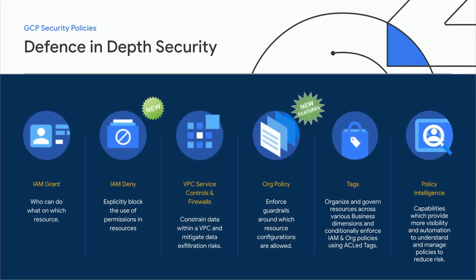In GCP, we take prevention seriously. We offer several complementary controls, such as IAM grant, VPC-SC, org policy, tags, policy intelligence, as well as new offerings such as IAM deny, that all applied together effectively guardrail access authorization and resource configuration.